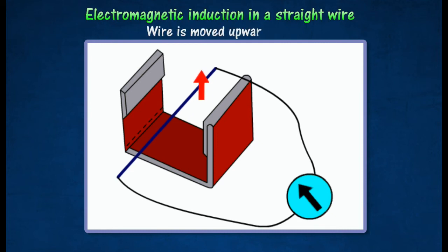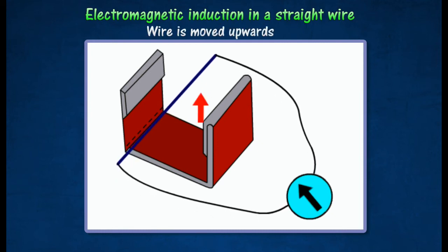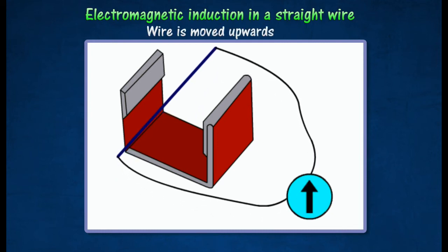When the wire is moved upwards, the galvanometer needle is deflected momentarily in the opposite direction, indicating that an induced current flows through the solenoid in the opposite direction.